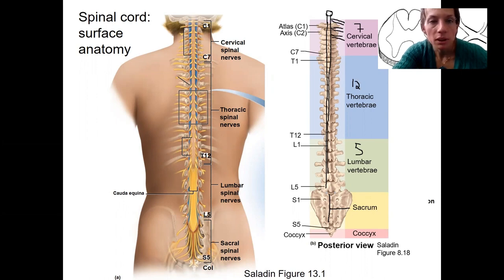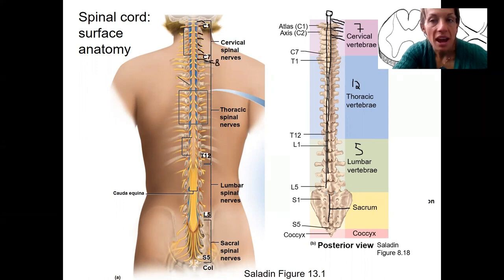In between C1 and C7, you have eight spinal nerves — counting one through eight. I'm going to add C8 in there. Eight pairs of spinal nerves, I should say.